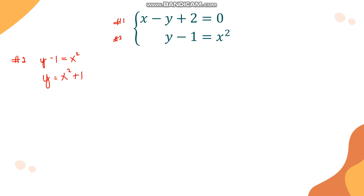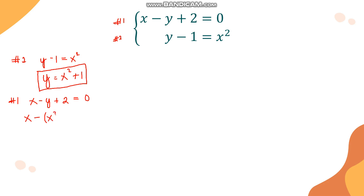We now have a temporary value of y which is x squared plus 1. Substituting into equation 1 — x minus y plus 2 equals 0 — we replace y with x squared plus 1, giving x minus (x squared plus 1) plus 2 equals 0. Distributing the negative sign: x minus x squared minus 1 plus 2 equals 0, which simplifies to x minus x squared plus 1 equals 0.